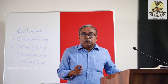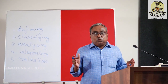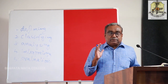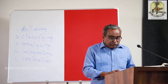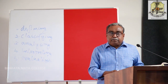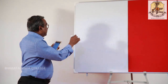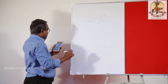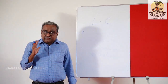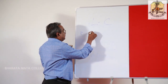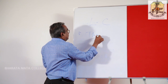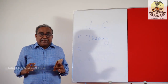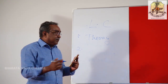Literary criticism can also be categorized into two kinds. Number one is theoretical criticism, and the second one is practical or applied criticism.